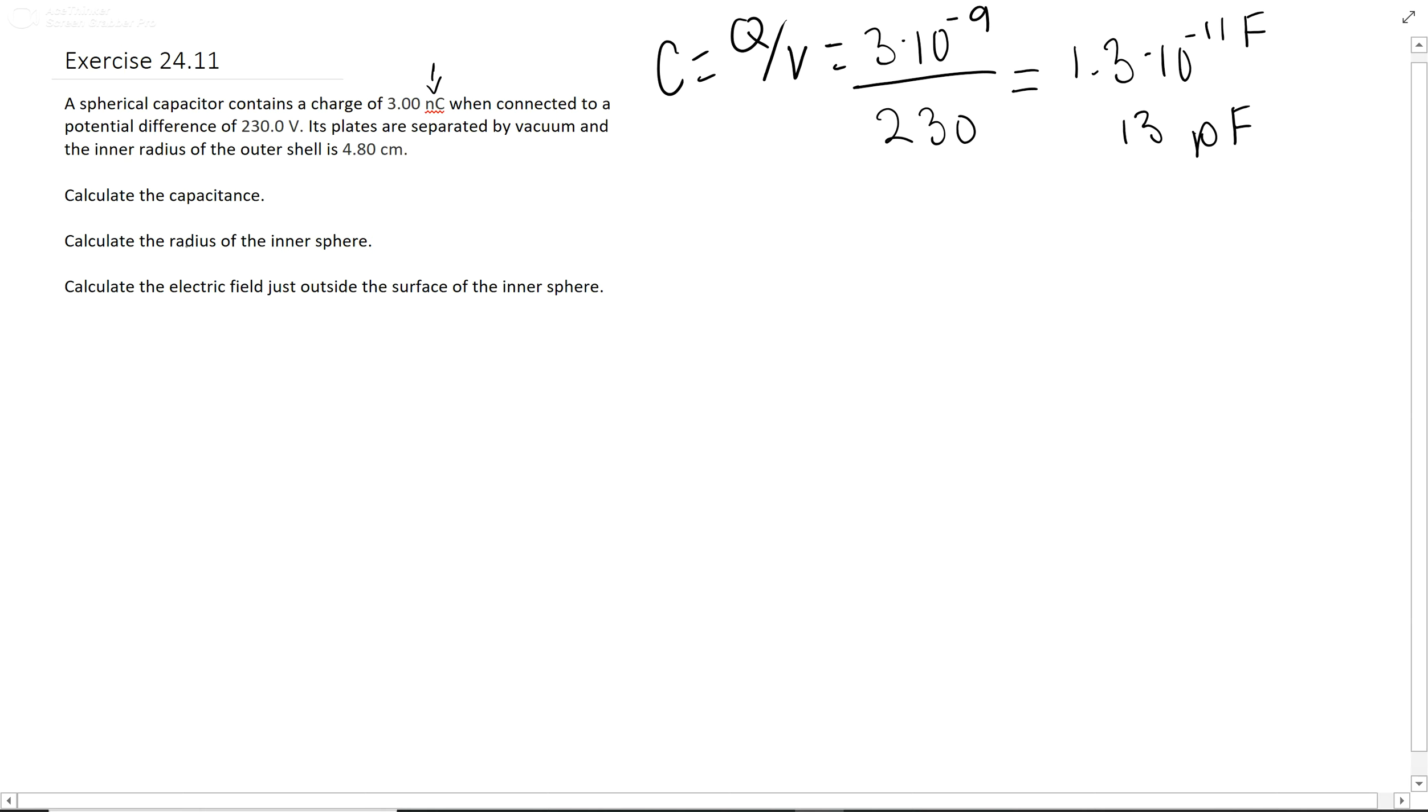The second part, the radius of the inner sphere, is actually just a very weird equation. That is C equals 4 pi epsilon naught, and then it's 1 over the inner radius minus 1 over the outer radius. So this is kind of just a matter of figuring out this equation or finding it somewhere.